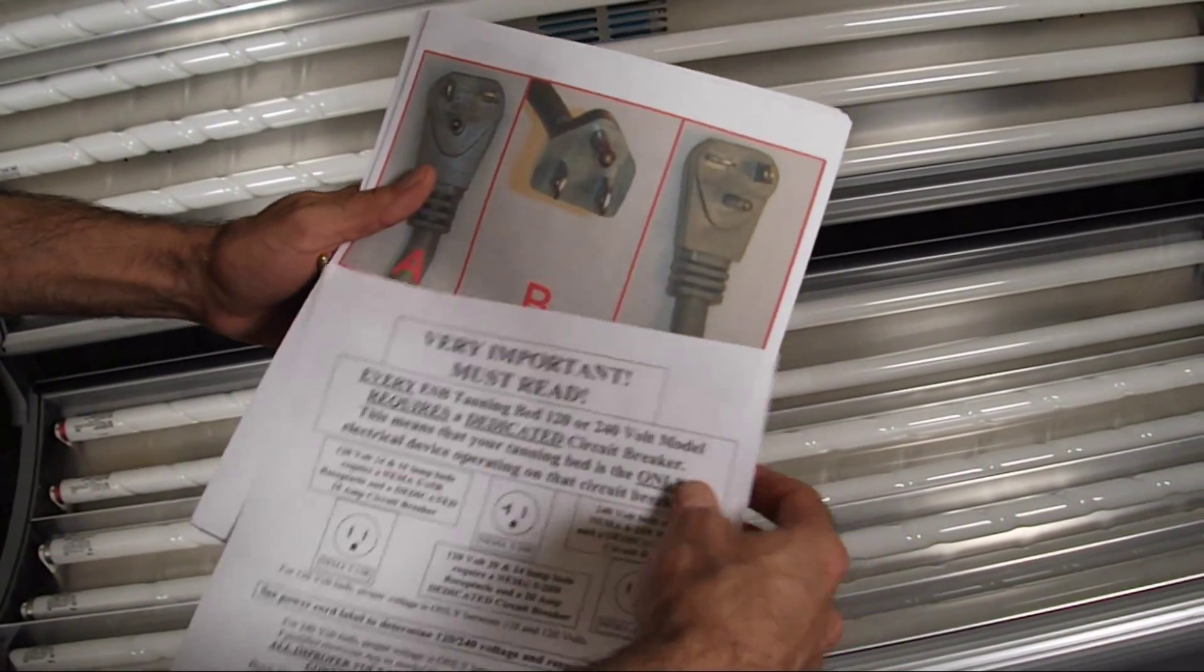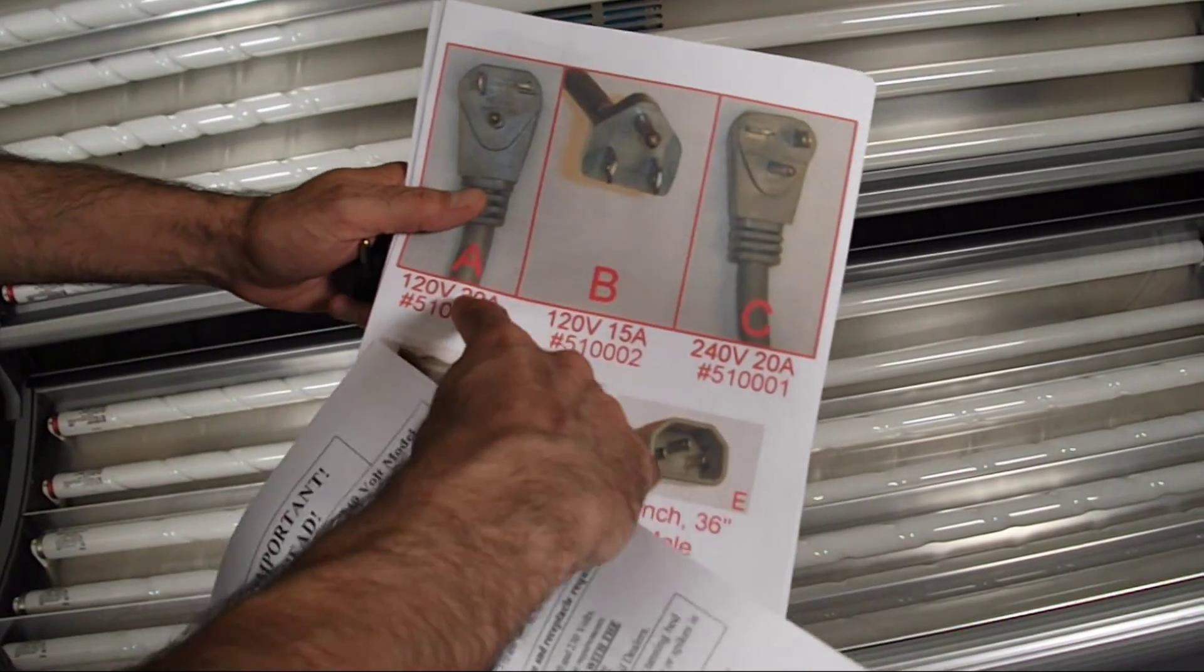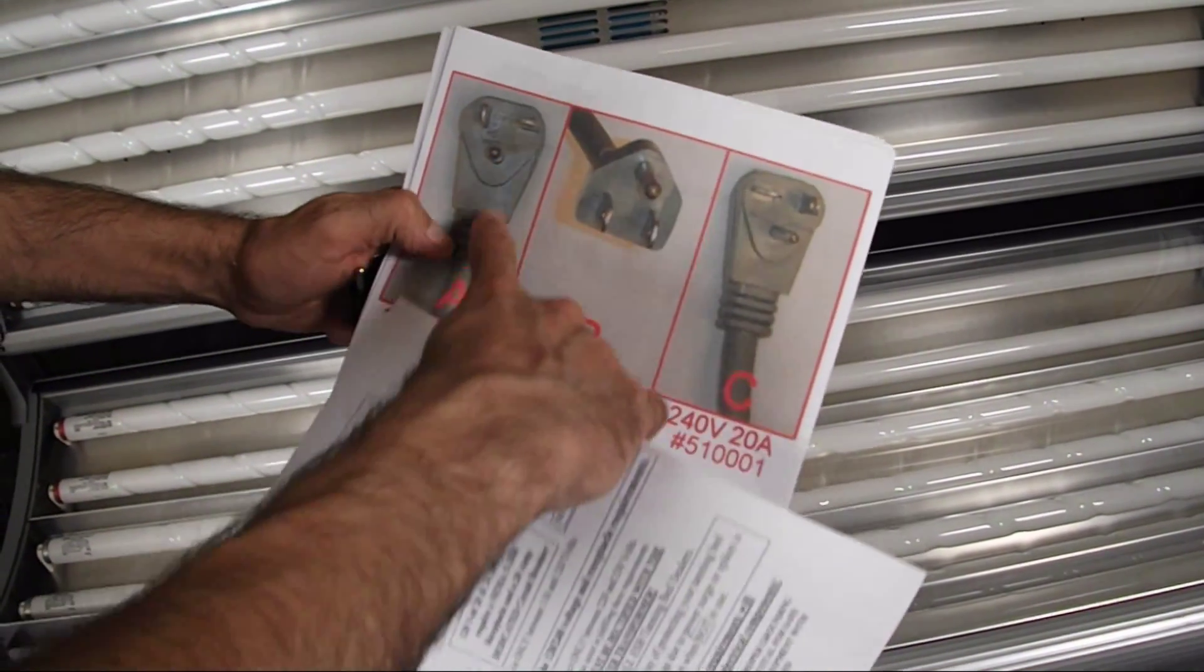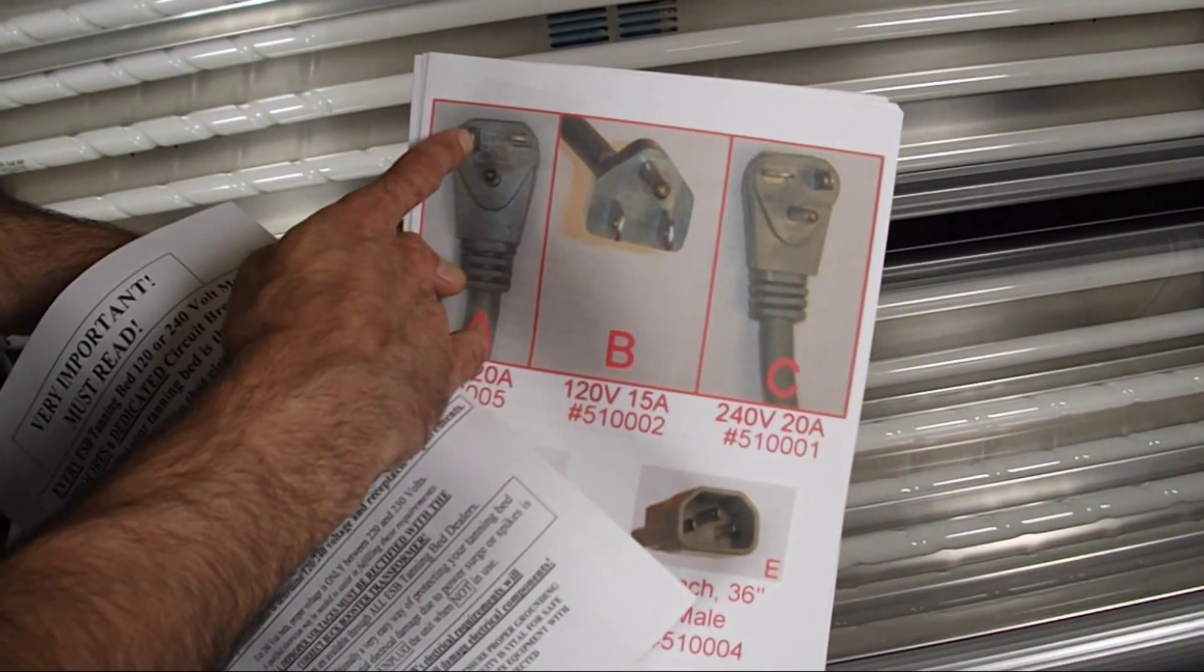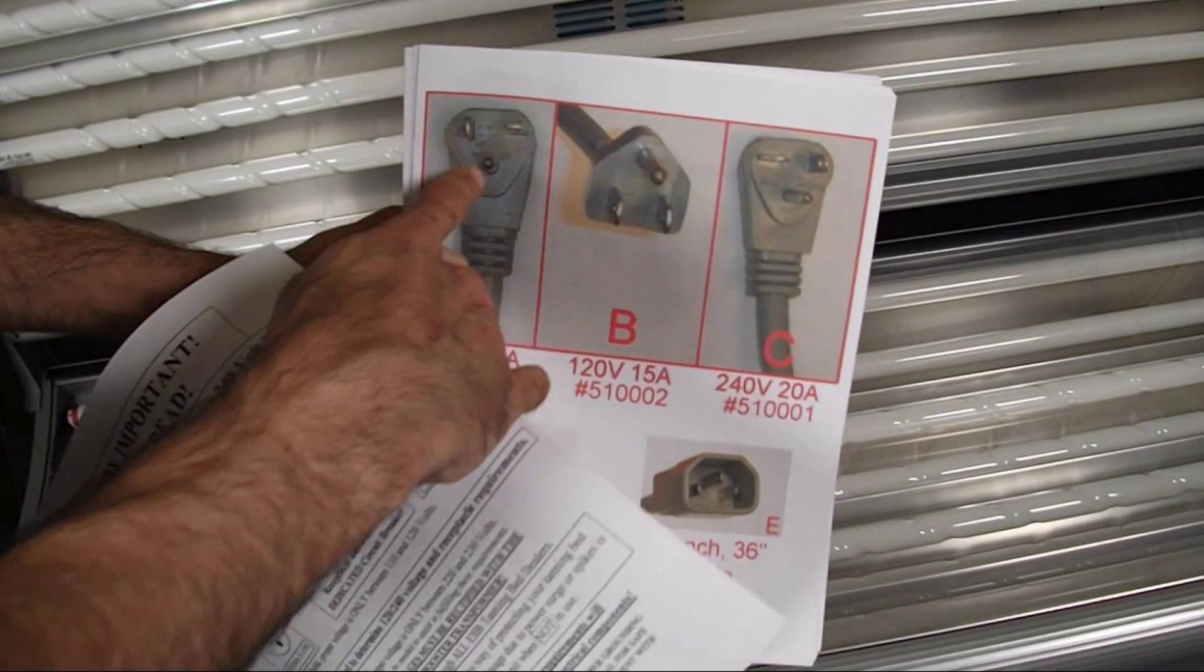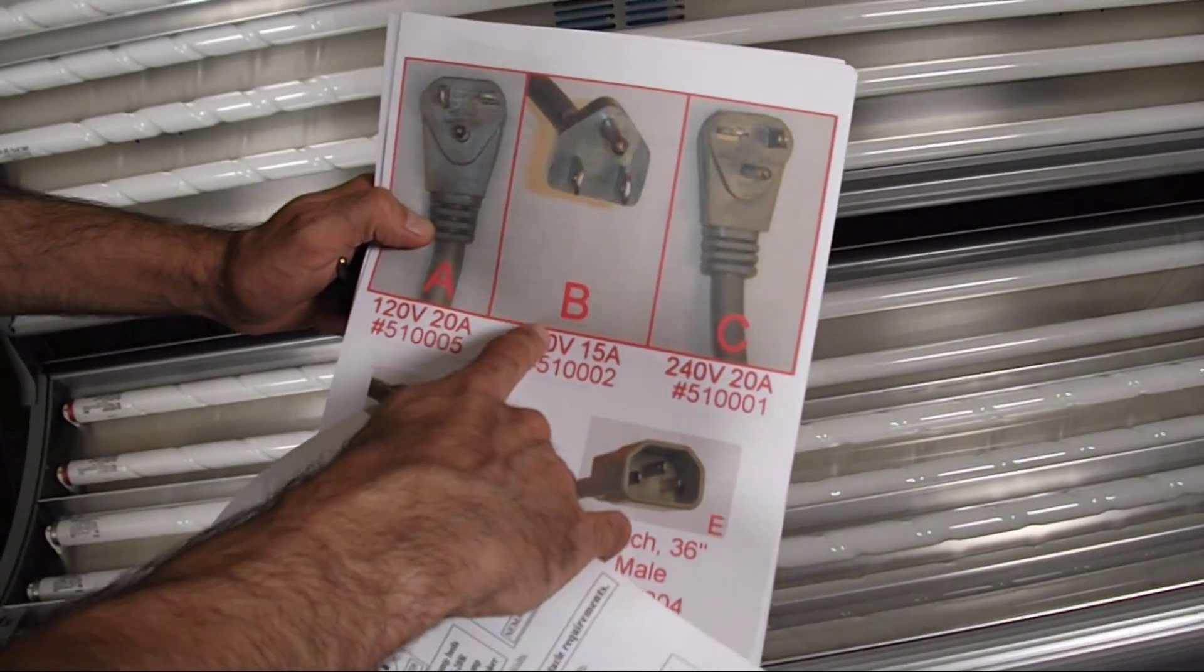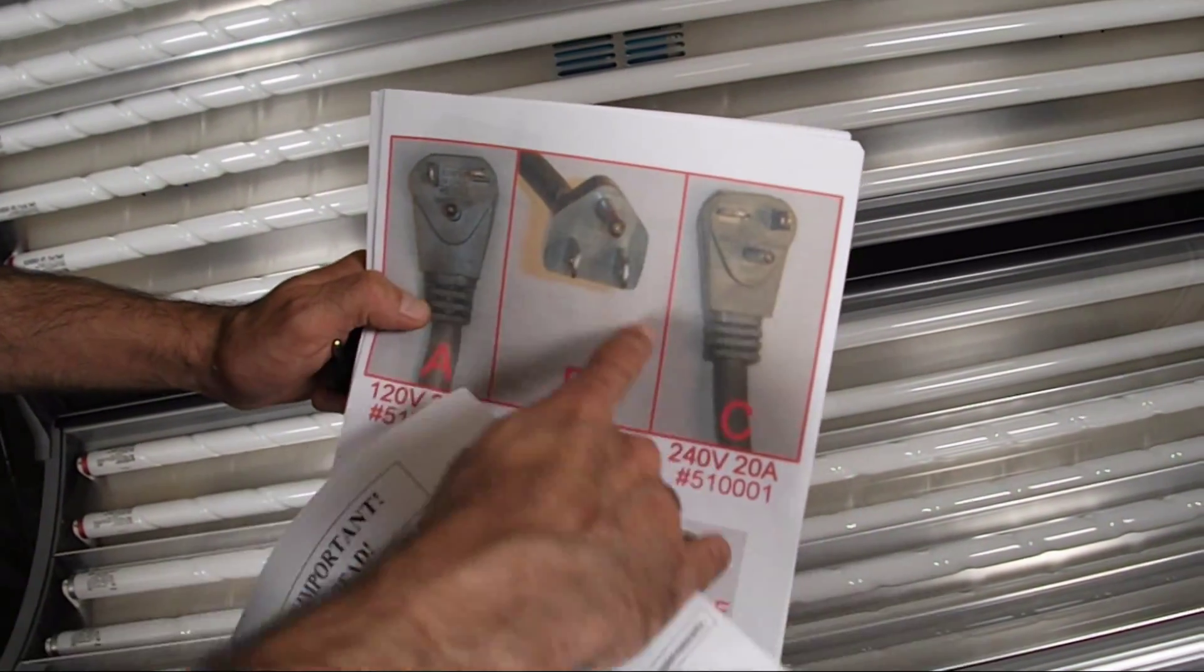These are what they look like here in this diagram, these first two. This is a 120 volt, 20 amp plug where you have a vertical terminal on the left and a horizontal on the right when the ground, the round one, is pointing right towards you. And this is the typical 15 amp plug with the two parallel blades.